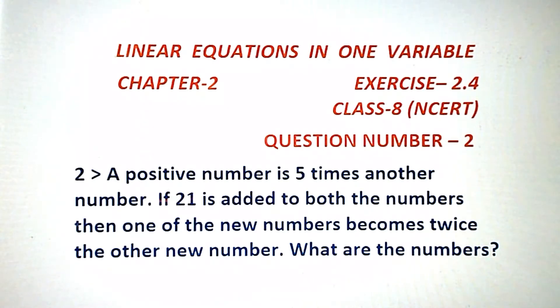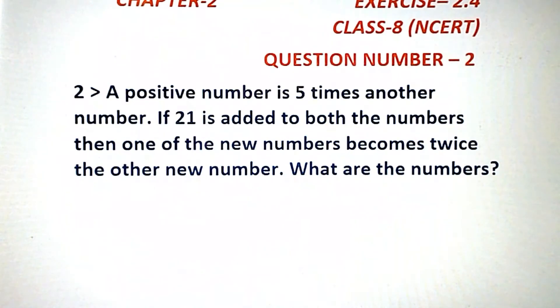A positive number is 5 times another number. If 21 is added to both the numbers, then one of the new numbers becomes twice the other new number. What are the numbers?